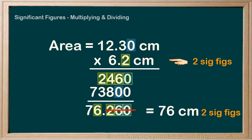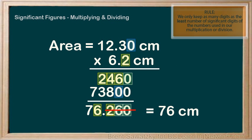The rule of multiplication and division is, thus, we only keep as many digits as the least number of significant digits of the numbers used in our multiplication or division.